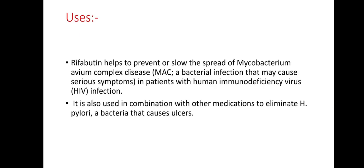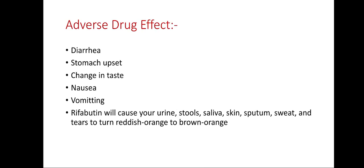Uses: Rifabutin helps to prevent or slow the spread of mycobacterium avium complex disease in patients with human immunodeficiency virus (HIV) infection. It is also used in combination with other medications to eliminate H. pylori, a bacteria that causes ulcers.